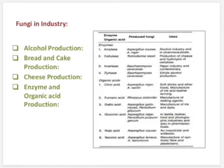Fungi in industry. Many fungi are used in the production of alcohol, bread, cheese, enzymes, and organic acids. Alcoholic fermentation by fungi is the basis of the brewing industry. The enzyme zymase of microorganisms like yeast is responsible for alcohol production. Wines are produced from grapes or other fruits by Saccharomyces ellipsoideus with about 14% alcohol concentration. Beer is brewed from barley and malt by Saccharomyces cerevisiae with 3–8% alcohol production.